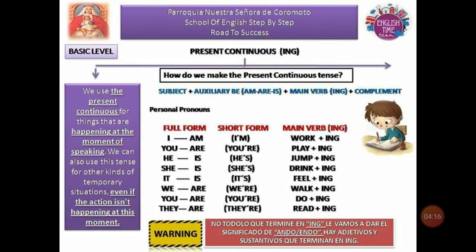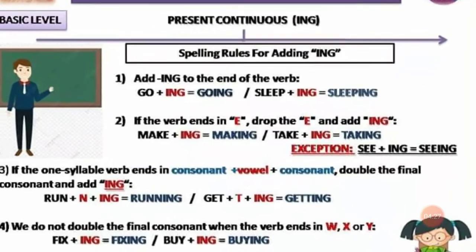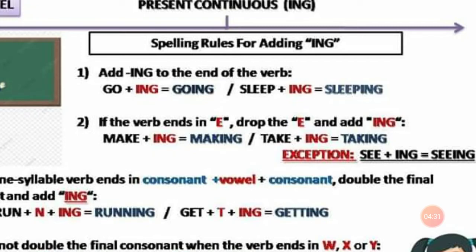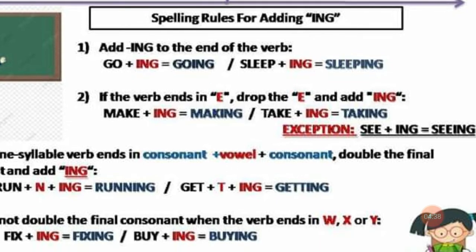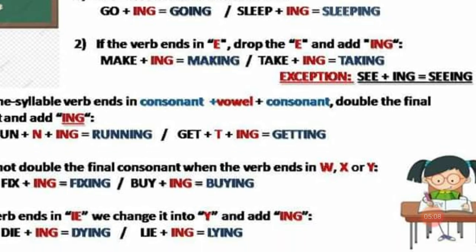Now we are going to study the spelling rules for adding ING. La primera regla: add ING to the end of the verb — añadir ING al final del verbo. Algo muy sencillo: go + ING = going; sleep + ING = sleeping. Segunda regla: if the verb ends in E, drop the E and add ING. Si el verbo termina en E, borramos esa E y luego colocamos ING.